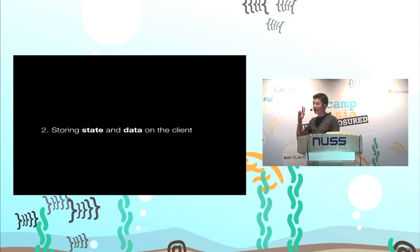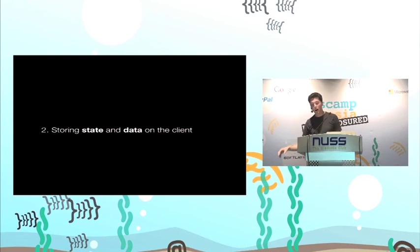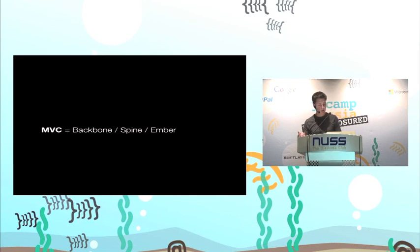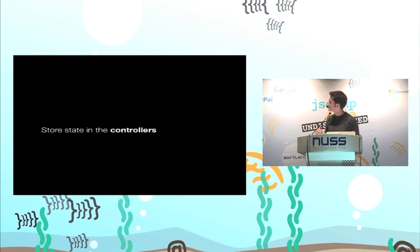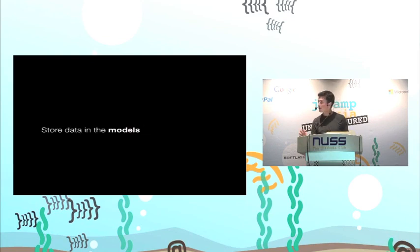View rendering is a pretty solved problem. Storing state and data on the client is slightly harder because it requires a change in how you develop — you have to take all that state you initially had on the server and bring it to the client. Luckily we have great frameworks: Backbone, Spine, Ember. The key thing they all have in common is MVC, and this is really important to make sure your client-side code doesn't turn into spaghetti. MVC means you keep logic in the controllers or views, store data in the models, and keep logic at the view layer — if you do that you can build a very complex JavaScript app without problems.